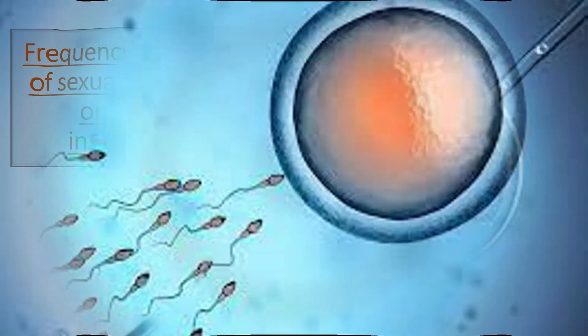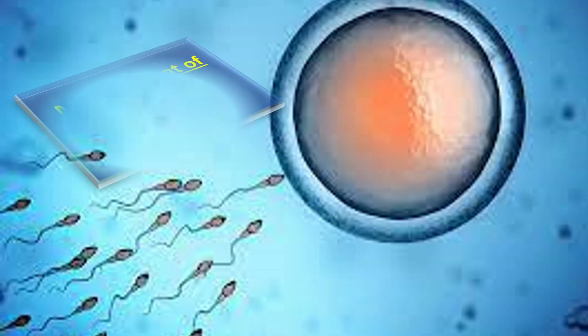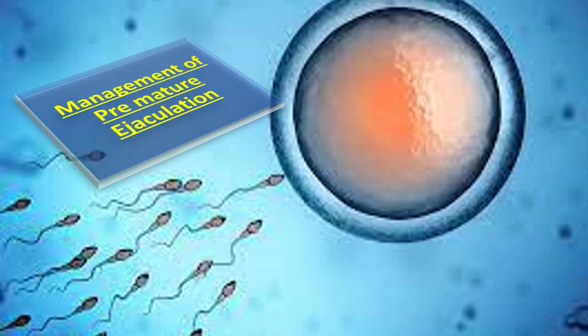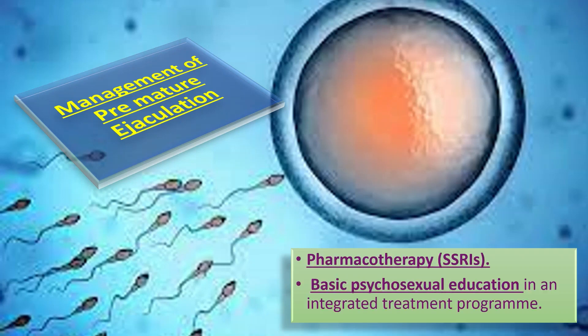How to manage premature ejaculation? It is best managed by SSRIs — pharmacotherapy. Acquired ejaculatory dysfunction may be due to erectile dysfunction and is managed by pharmacotherapy along with basic psychosexual education.